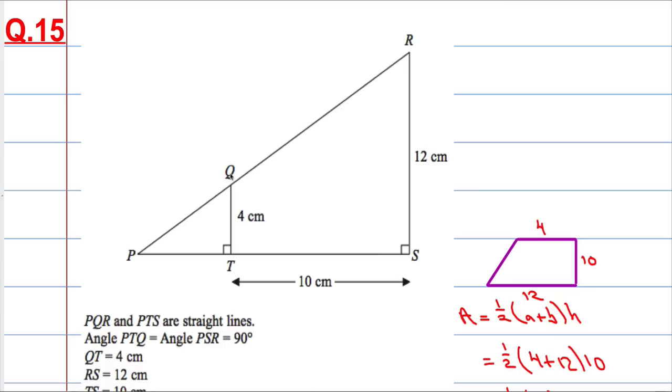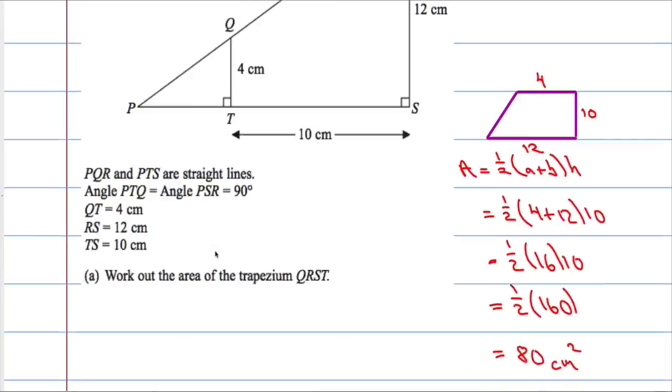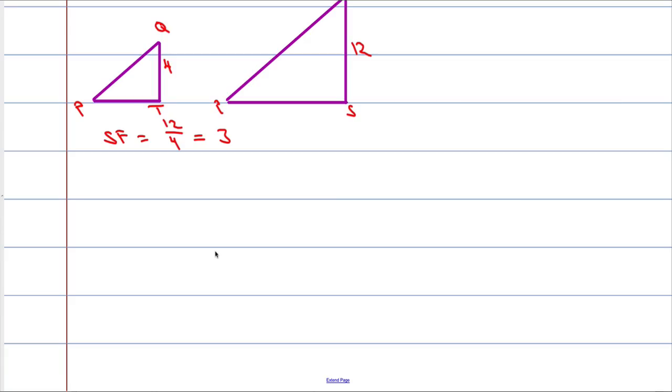So if we go back to our diagram, if the scale factor is 3, that means that PS must be 3 times the length of PT. PS must equal 3 times PT.